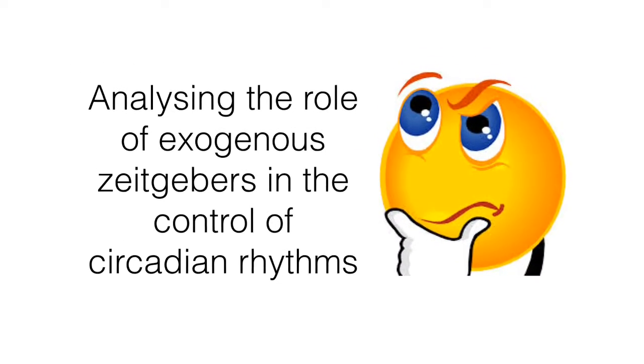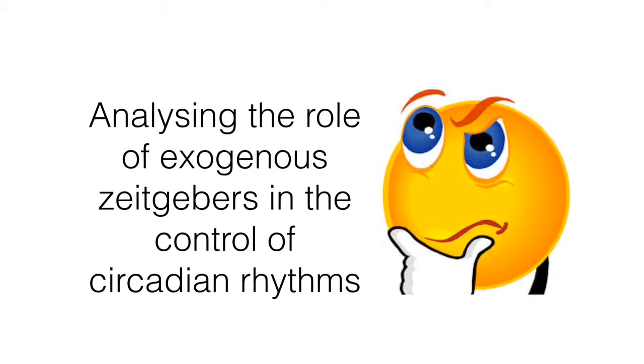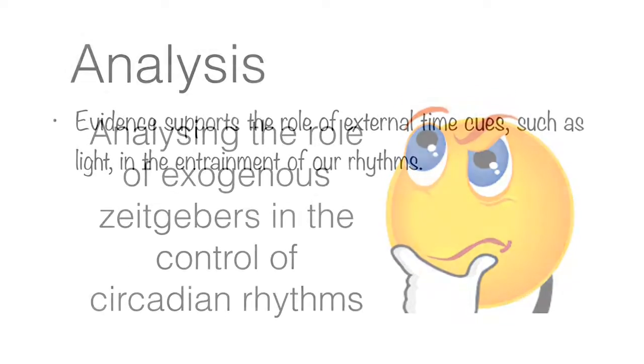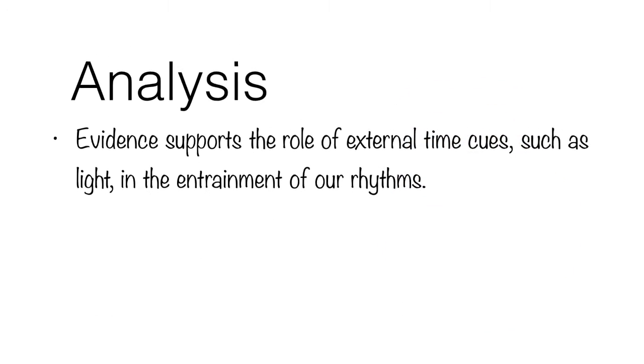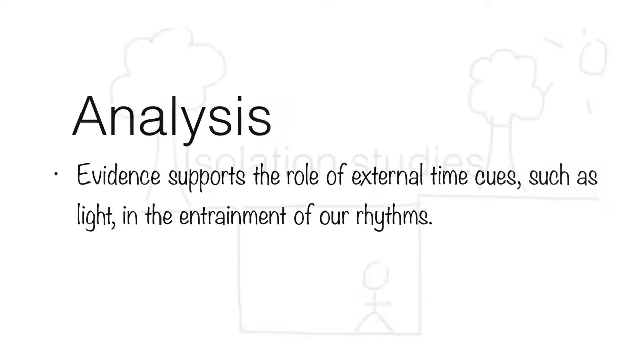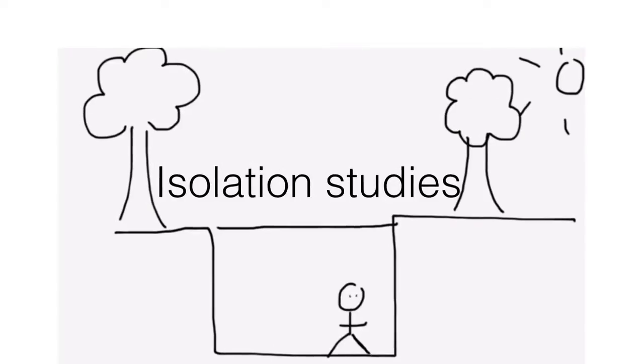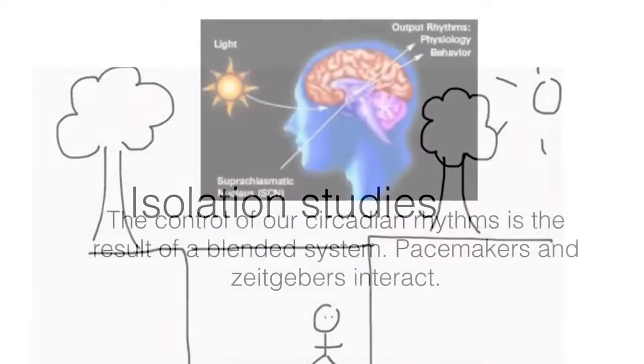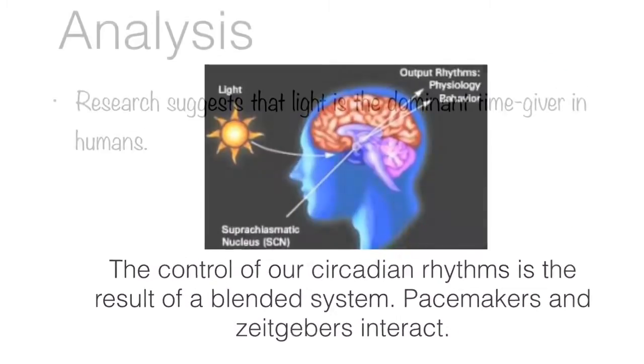The following points may be useful for analysing the role of exogenous zeitgebers in the control of circadian rhythms. Evidence from isolation studies supports the idea that we need the external time cues, such as light, to entrain our internal rhythms. It is therefore vital to understand the interaction of the internal clock and the external zeitgebers.